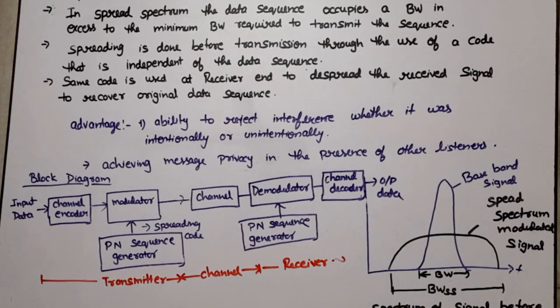This is the block diagram working. First of all we have input data which is passed to channel encoder. Channel encoder encodes the input data. After this, encoded data is applied to the modulator. Modulator has two inputs: one from channel encoder, second from the PN sequence generator. This is the random sequence of data which works like noise and this is used to spread the channel.